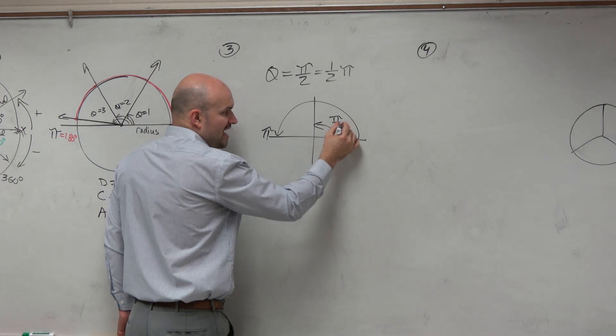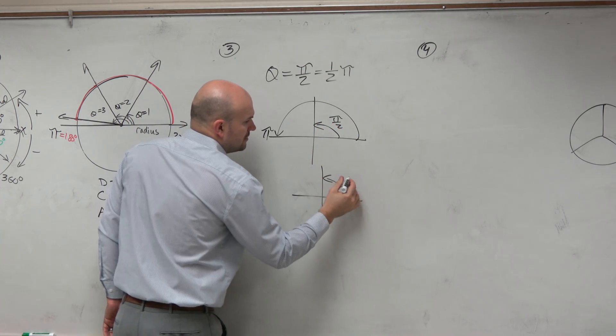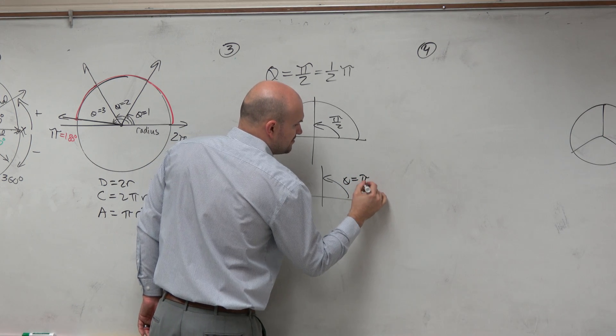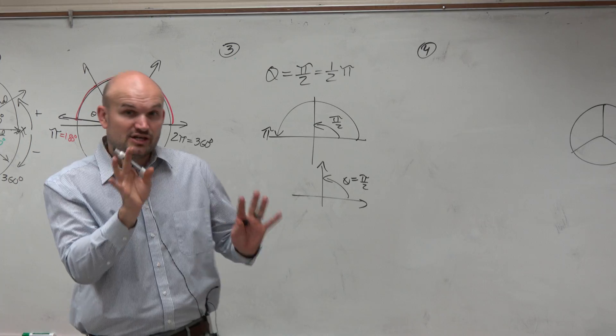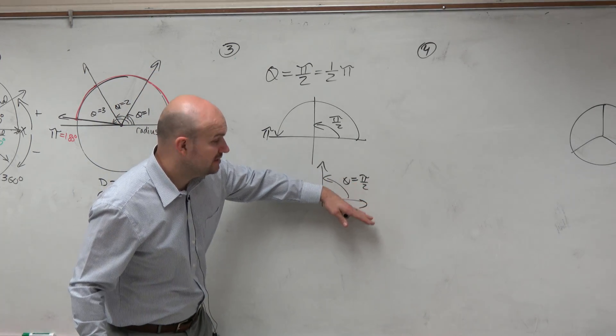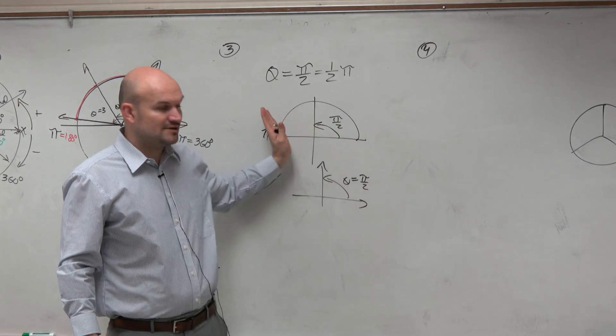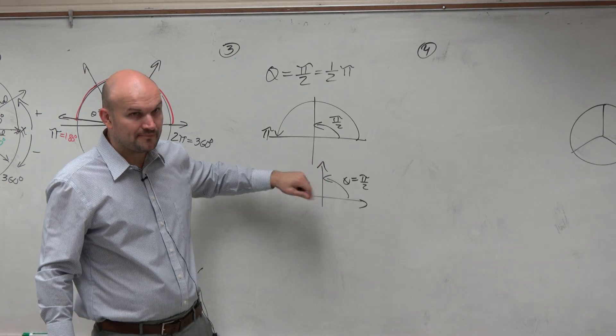So that's pi halves. So theta equals pi halves. There is my reference angle in standard form. Make sure, again, you're talking about direction. You're starting here, and you're rotating in the positive direction. And we're representing that with an arrow.